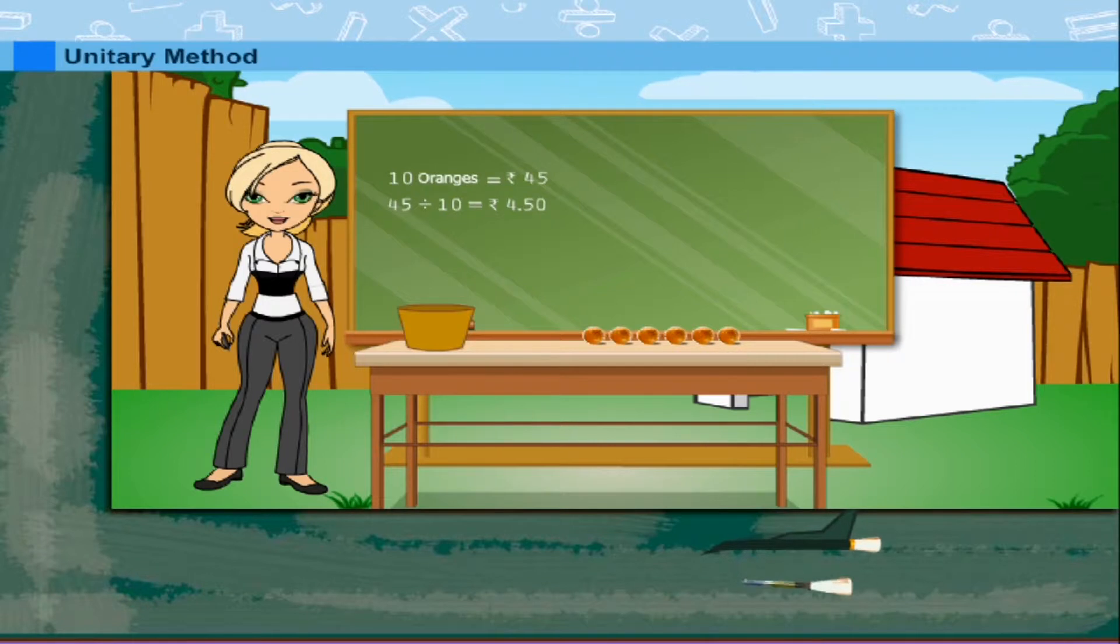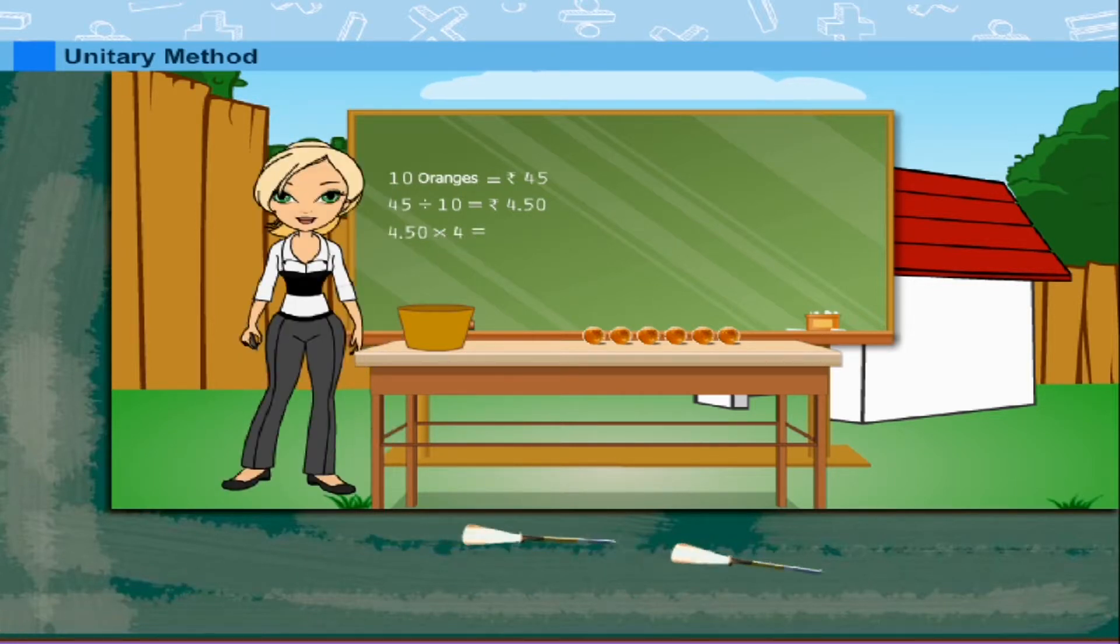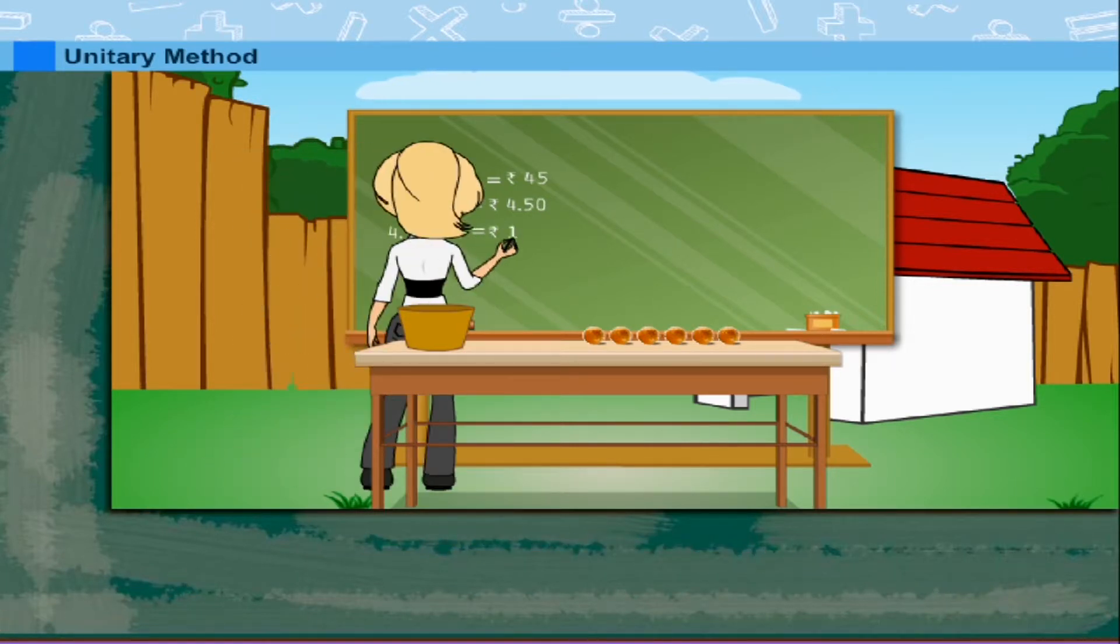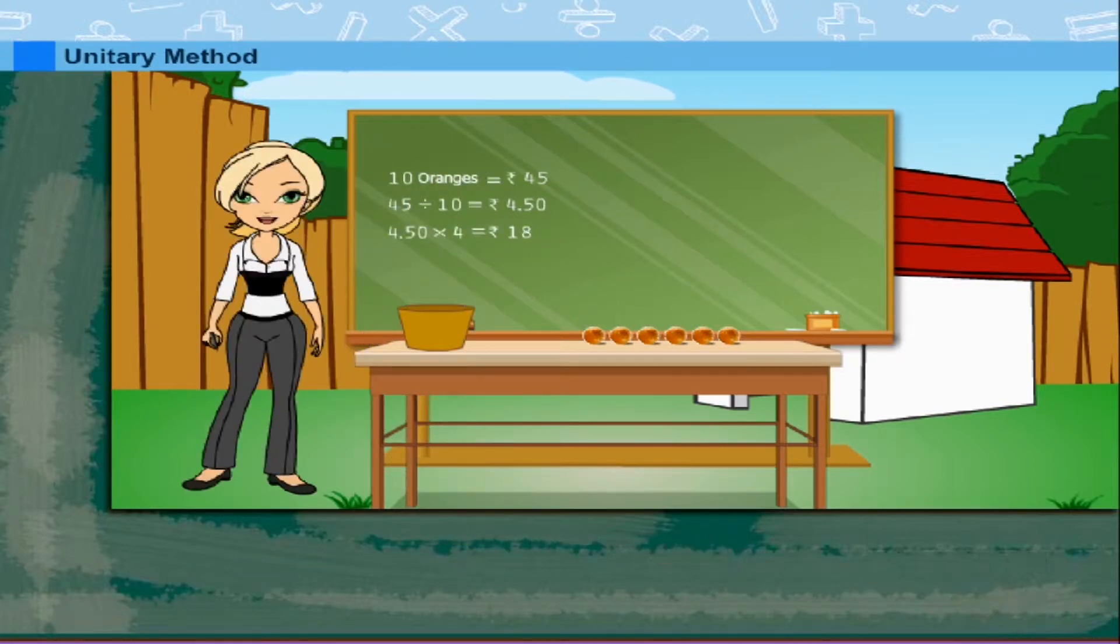The cost of 4 oranges is Rs.4.50 multiplied by 4. This is Rs.18. Rosie ma'am explains that this is called unitary method. Step 1 is to divide and step 2 is to multiply.